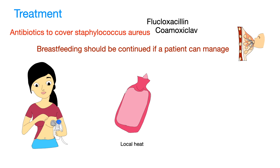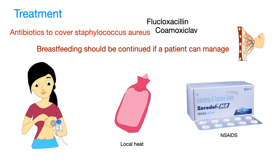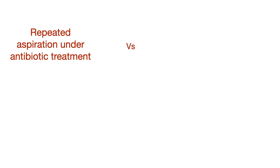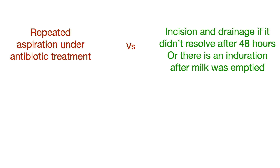Local application of heat can help relieve pain, and painkillers like NSAIDs can be used. The recent practice is repeated aspiration under antibiotic treatment. Previously, it used to be incision and drainage if the condition did not resolve after 48 hours or there was persistent induration.